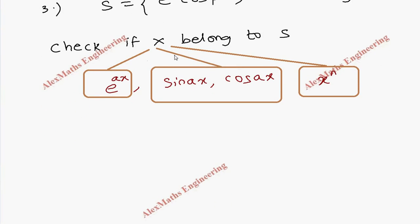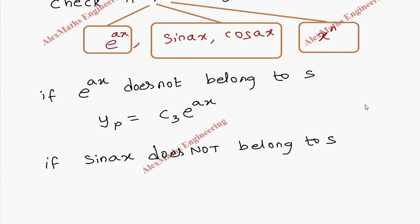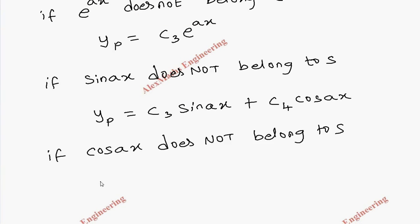If f(x) does not belong to the solution set S, we handle each case as follows. If e^(ax) does not belong to S, then we assume the particular integral as some constant times e^(ax). If sin x does not belong to S, then we assume the particular integral as c3 sin x plus c4 cos x. Similarly, if cos x does not belong to S, we still assume the particular integral as c3 cos x plus c4 sin x. The sin x and cos x always come together.